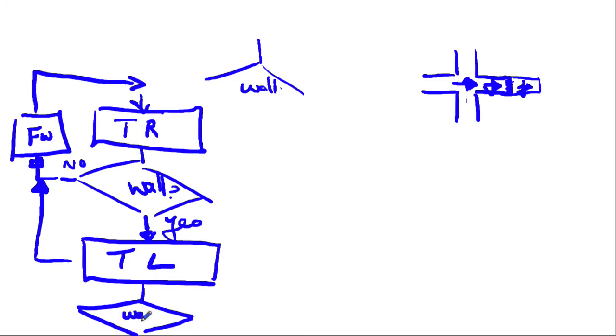So is there a wall? And there happens to be a wall. Yes. So I need to turn left again. So I'm pointing up this way. So I can see I've sort of got an error here. And I shouldn't have come off this point because if there was no wall, that's the only time I wanted to go forward.